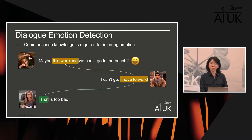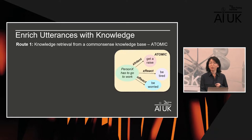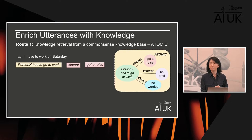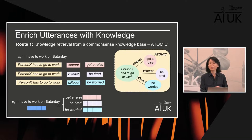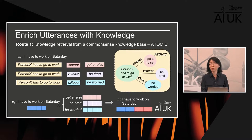To capture common sense knowledge, we rely on an external knowledge base — in this case, ATOMIC. In ATOMIC, nodes represent events and edges represent relations connecting events. For the utterance 'I have to work on Saturday,' we search the ATOMIC knowledge base, find the most relevant events, and identify the speaker's intention, reaction, and the other person's reaction. We then combine this retrieved knowledge through pooling or attention and integrate it with the utterance representation.